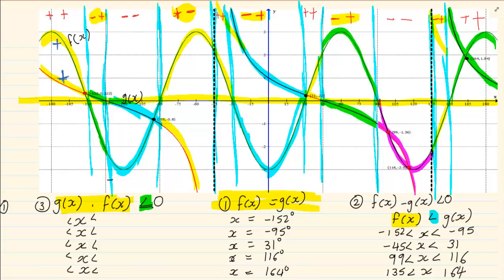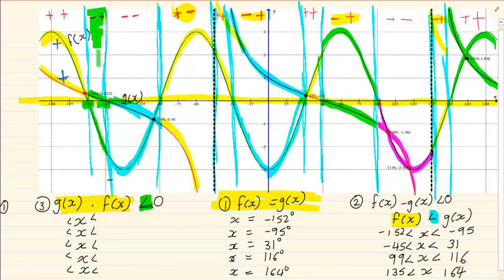How do we write our answer? Remember it's exactly the same with the same inequalities. But what are the x values? If we look at the x values, for this specific row the x value is between minus 150 and minus 135.